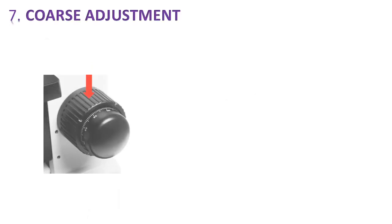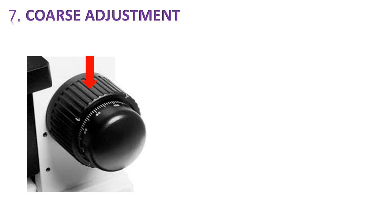And the seventh region is coarse adjustment. It is used to general focusing of a specimen. Using a knob which we can spin or turn around, which adjusts the focus of the specimen in general terms.